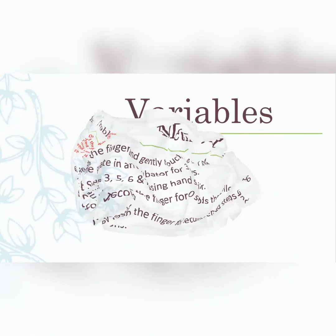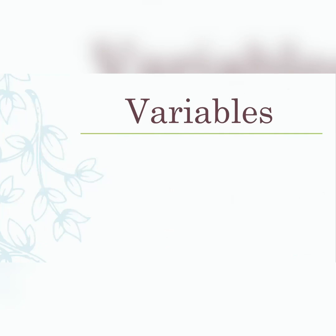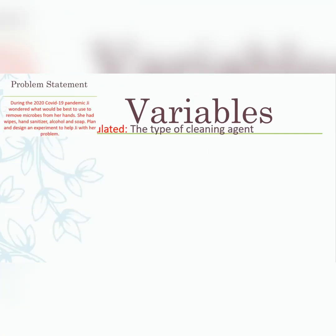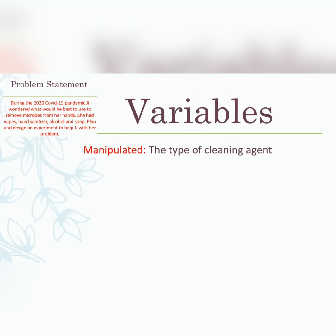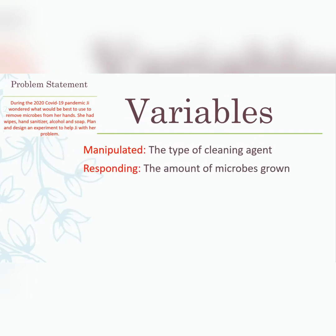Now we move to variables. There are three or four variables. Your manipulated variable is the type of cleaning agent being used — alcohol, hand sanitizer, wipes, or soap. The responding variable is the amount of microbial growth on the agar plate, which reflects how clean the surface is after each treatment.